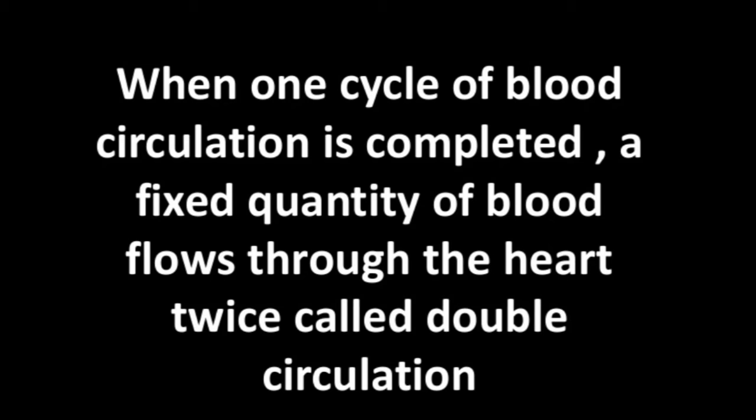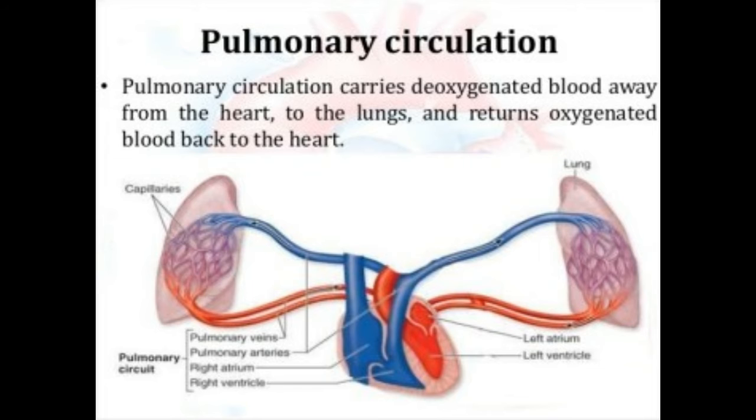The definition: when one cycle of blood circulation is completed, a fixed quantity of blood flows through the heart twice — that is called double circulation. Simply put, in one cycle when blood moves twice through the heart, that is double circulation.